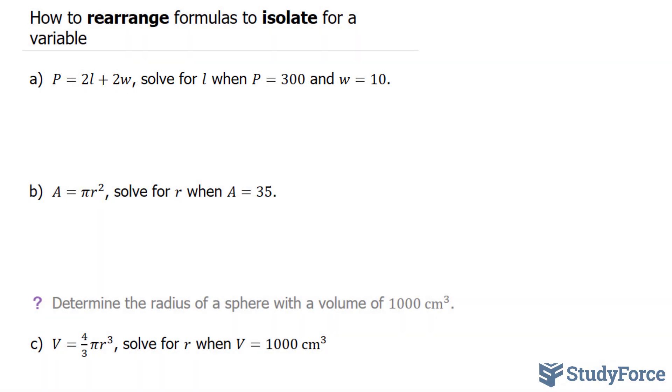This formula right here represents the perimeter of a rectangle. The goal here is to first isolate for the letter, and then substitute the numbers that represent those letters. So our target is this L right here. This is our target.